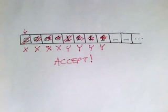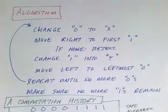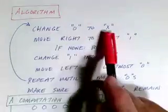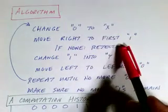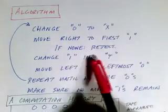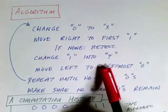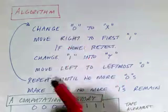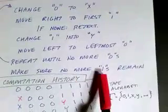So by accepting we say yes this string is in the language. Reject is saying no this is not in the language. So here's the algorithm expressed in pseudocode. Change a zero to an X. Move right to the first one. If we can't find one then we reject. Change that one into a Y. And then move left to the leftmost zero. And then repeat until we have no more zeros. And then make sure we have no more ones either.